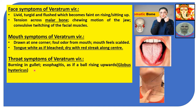Throat symptoms of Veratrum Viride: burning in the gullet (oesophagus) — the pipe connecting throat and stomach. Oesophagitis means inflammation of the oesophagus. As if a ball is rising upwards — this is called globus hystericus. Patients report feeling a ball stuck in the throat; when they swallow it goes down, but it comes back up. This is actually a form of heartburn or acid reflux. When the pylorus end of the stomach is blocked, gas and acidity churn upwards towards the throat, producing globus hystericus.